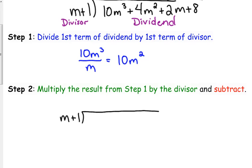So I've got to rewrite my problem here so that I can show my work. Now, some of you do not like to be careful and organized and neat with things, but let me go ahead and tell you, the more organized and neat you are with these, the easier it's going to be. So the result was 10m². I'm going to line it up with the m² term in the dividend.